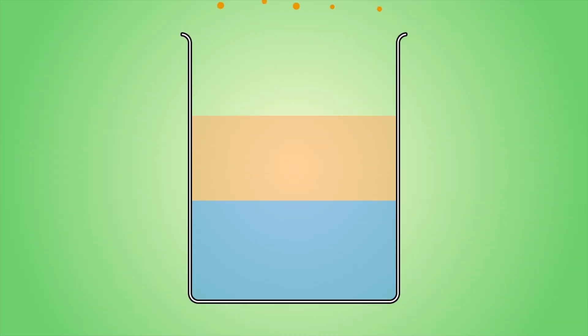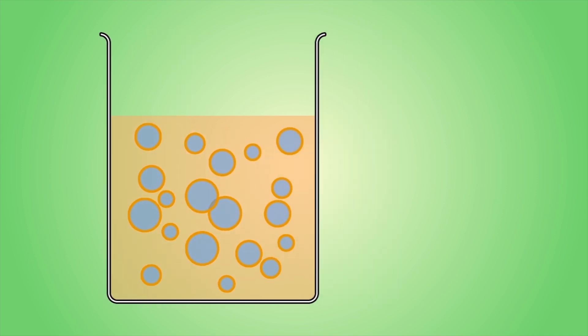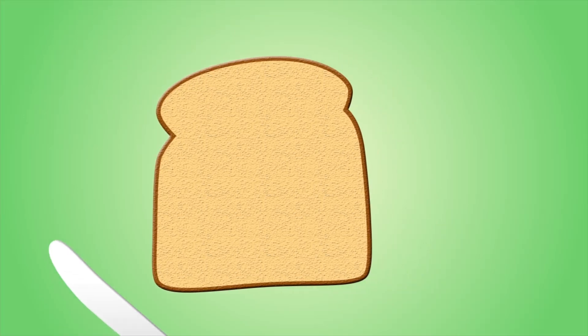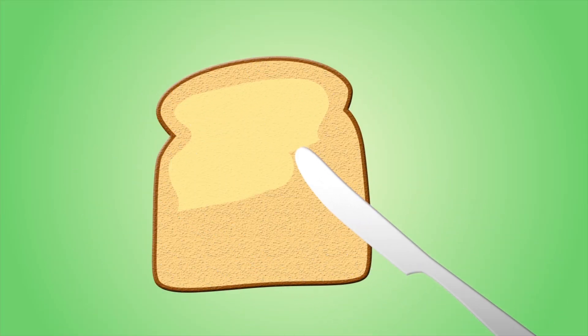We have previously learned that an emulsion is a mixture of two immiscible liquids stabilized using an emulsifier. Margarine is a very good example of an emulsion.